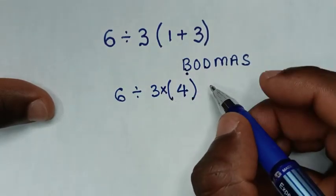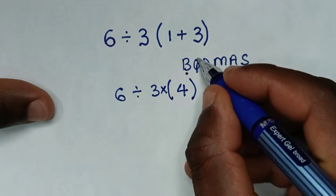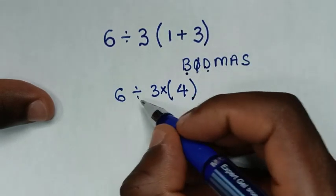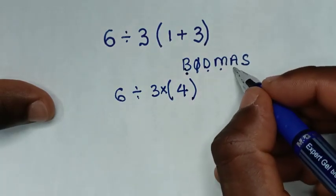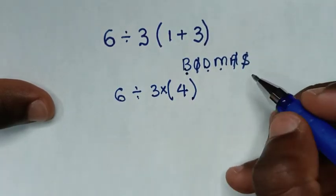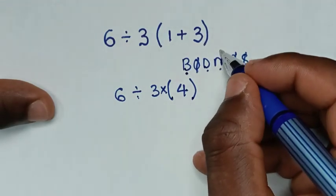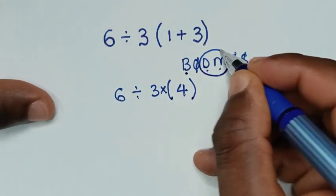Now from the rule order we don't have order in here, division we have division here, multiplication we have this multiplication, but we don't have addition and subtraction. So we'll use this group of division and multiplication according to which starts first.